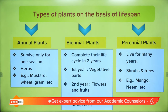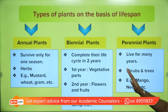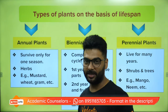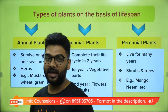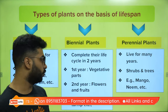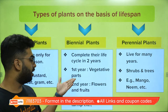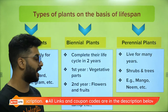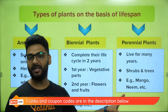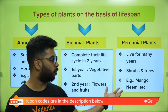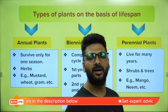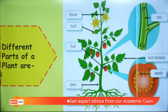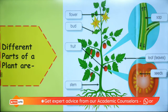Based on lifespan, we have annual plants that survive for one season, like mustard, wheat, and gram. Then we have biennial plants that live for two years — the first year is the vegetative part, the second year is flower and fruit — like radish, carrot, and turnip. Then we have perennial plants that live for many years, like coconut, mango, neem, and banyan. Some banyan trees in our country are more than 1,000 years old.